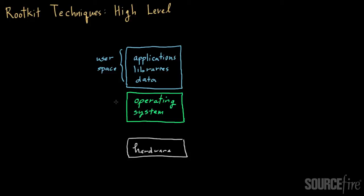Going down a level, you have what's called kernel space, which is where the operating system runs — Windows, Linux, Unix, etc. The core operating system functionality operates in kernel space. When you want to do a low-level operation like writing a file to disk, that involves operations at the kernel space because the kernel is the interface between your high-level user mode applications and the actual hardware. The hardware — the physical CPU, keyboard, monitor — is the bedrock on which everything runs.